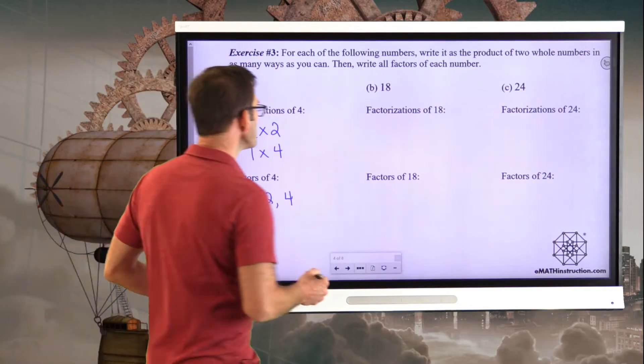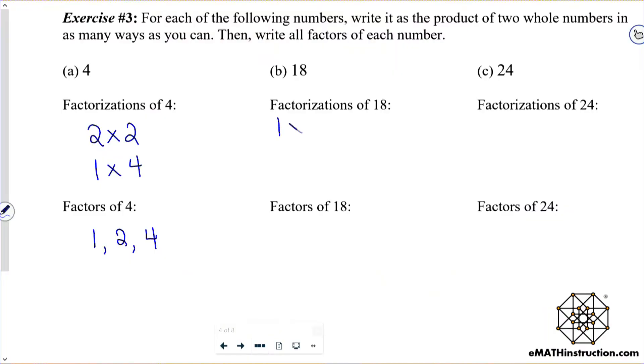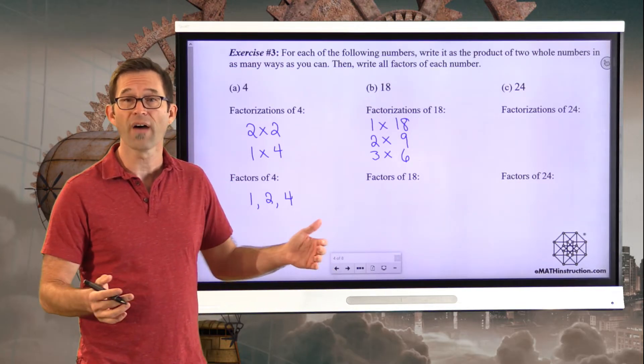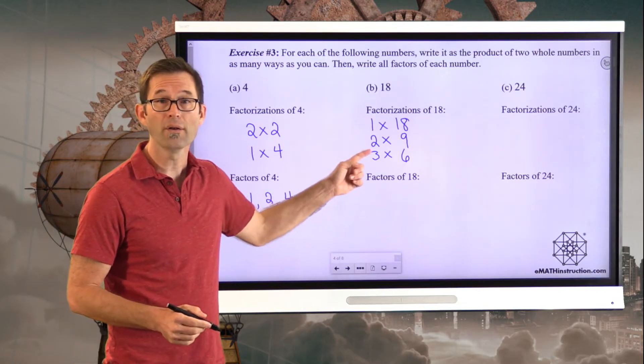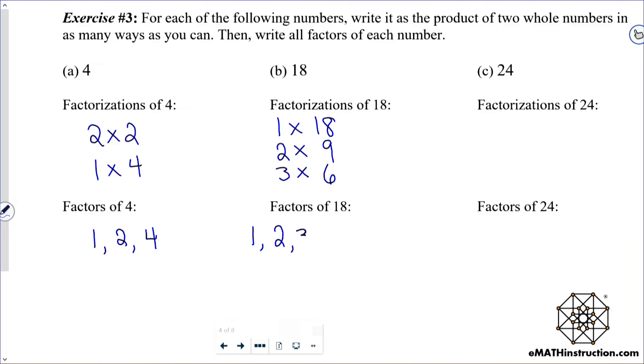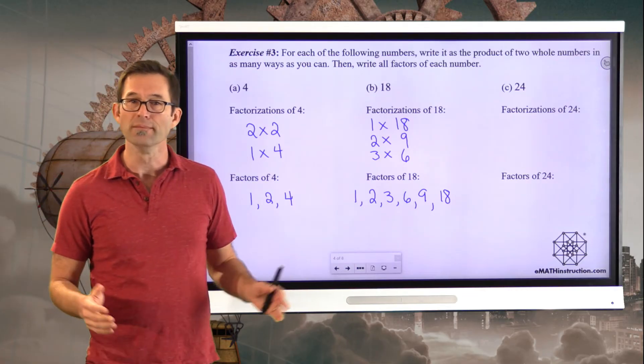Let's do 18. First off, the factorizations of 18. If you haven't picked up on this yet, one of the factorizations is always 1 times the number. Then we would also have 2 times 9. We'd also have 3 times 6. And that's it. That's all we have as the factorizations of 18. Now, we can say the factors of 18 are 1, 2, 3, 6, 9, and 18. I don't have to write them in order, but it's kind of nice if you do.